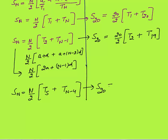Similarly, the sum of first 20 terms can be calculated as 20 by 2 times t5 plus t16, where t5 is the fifth term from the beginning and t16 is the fifth term from the end.